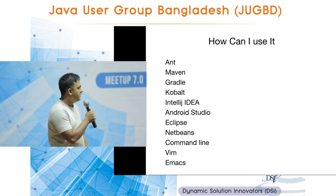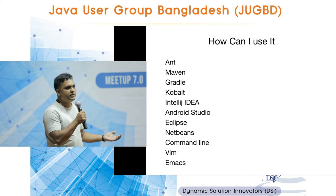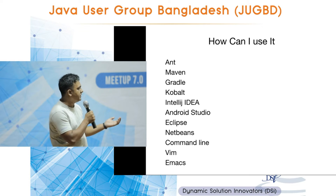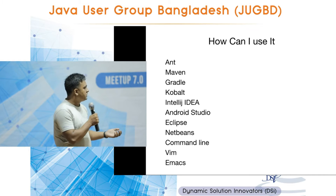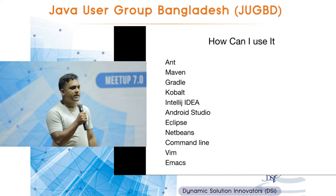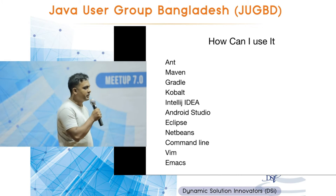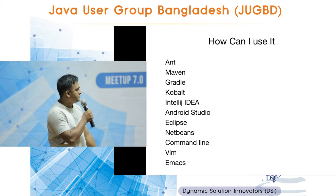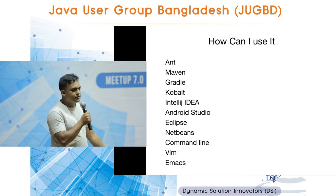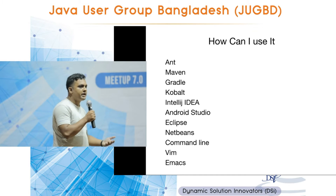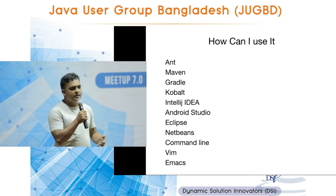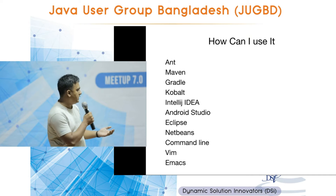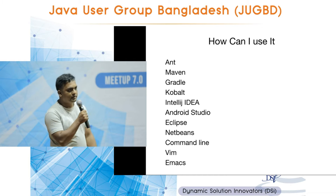How can you use Kotlin? You can use it anywhere you are already using Java — with Ant, Maven, Gradle, or Kobalt, which is another build tool like Gradle but completely written in Kotlin. You can use your favorite IDE: IntelliJ IDEA, Android Studio, Eclipse, or NetBeans. If you're not an IDE person, you can use it directly on the command line with Vim or Emacs.